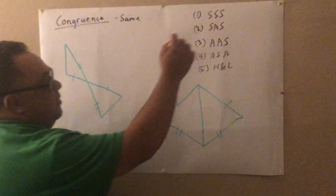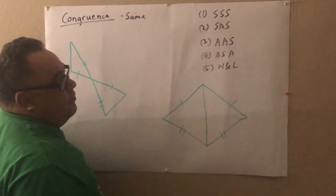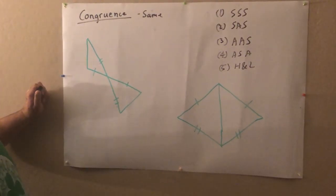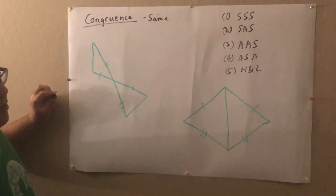We have five different types of congruences. S stands for side, A stands for angle. So we have side, side, side; side, angle, side; angle, angle, side; angle, side, angle. And H and L stands for hypotenuse and leg.